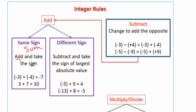If they're different signs, you're going to find the difference or subtract, and then take the sign of the larger value — the larger absolute value. Those are pretty easy.